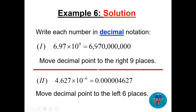So 6.97 times 10 to the power 9 becomes 6,970,000,000 — moving 9 places: 1, 2, 3, 4, 5, 6, 7, 8, 9. And for the negative power example, you move the decimal point to the left, giving 0.00004627.